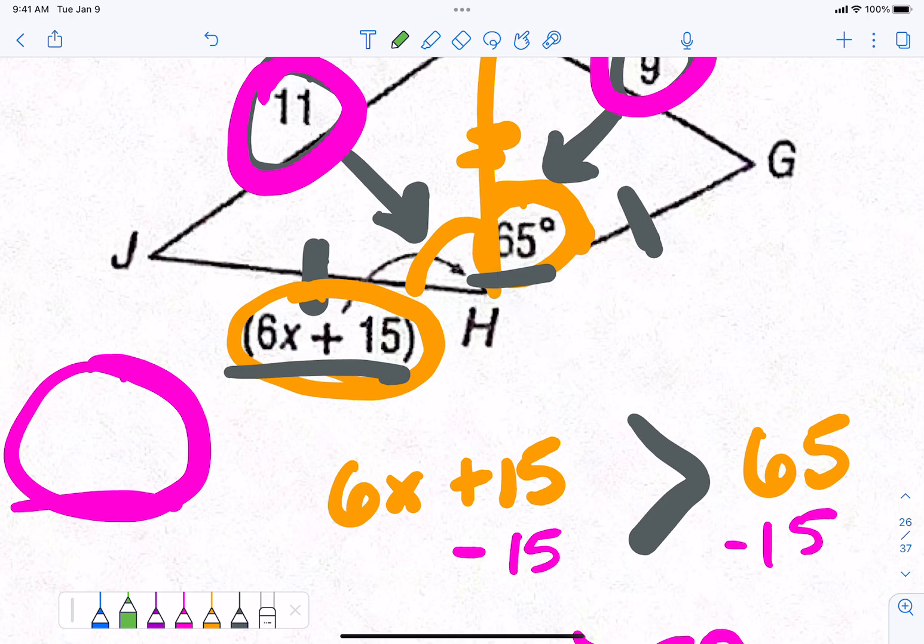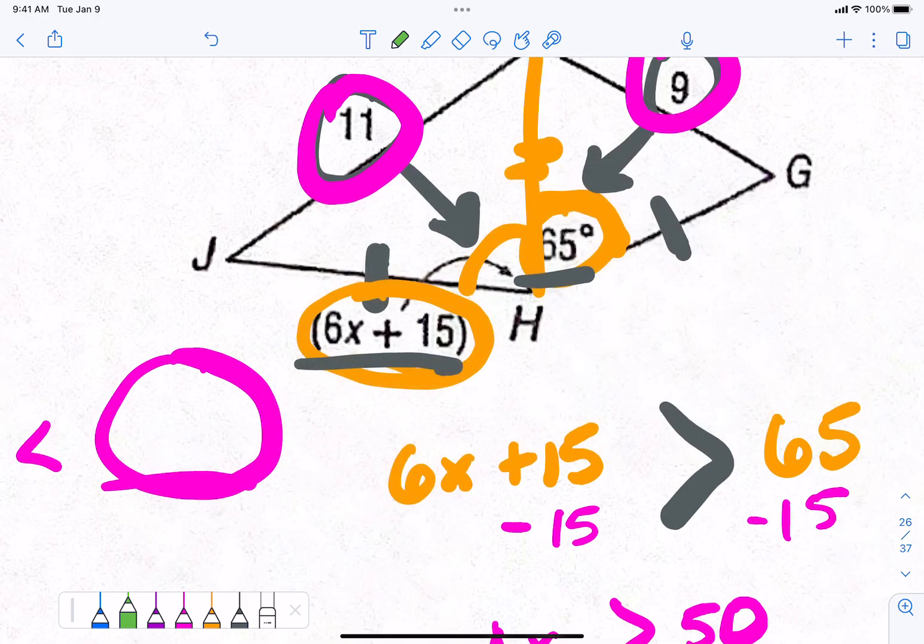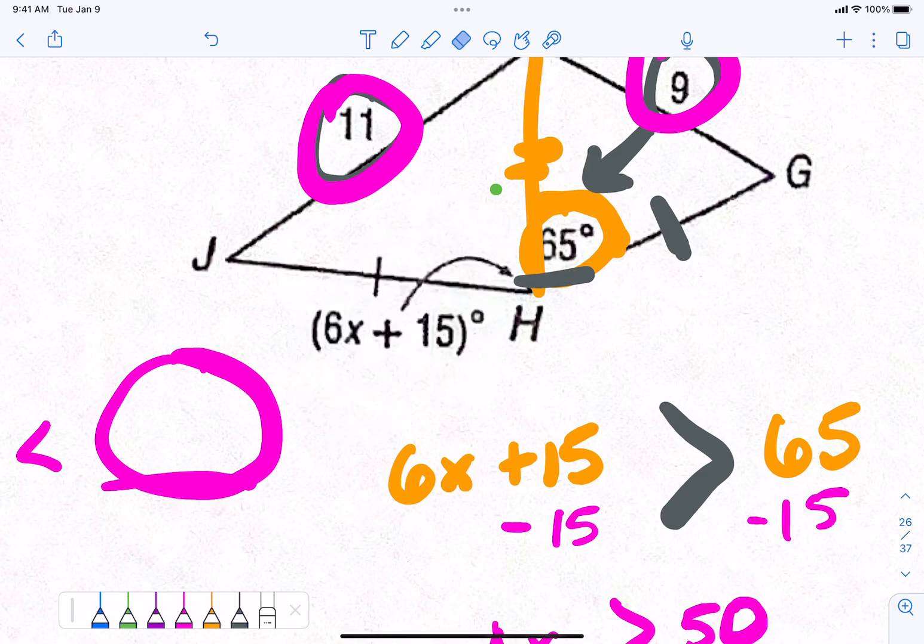Okay, like, let's say, like, x is 100. Can we plug 100 in for x? This would be 6 times 100, which is 600 plus 15. This would be a 615 degree angle. Can this be a 615 degree angle? No. So, x has to be smaller than something.